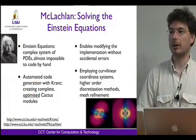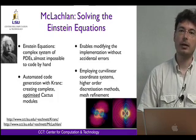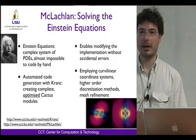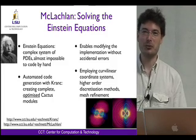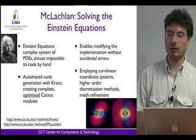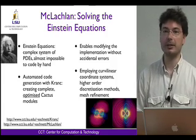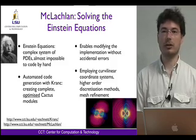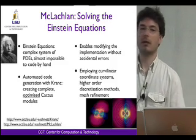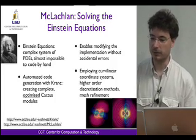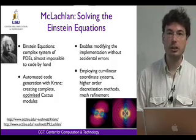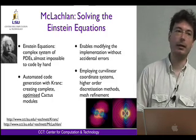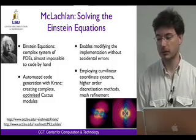To model the Einstein equations, we have created the McLachlan code. The Einstein equations are an incredibly complex system of partial differential equations, and it is virtually impossible to code them by hand correctly. We therefore use automated code generation that takes the Einstein equations and creates complete Cactus modules optimized for a particular architecture. Automated code generation allows us to modify the implementation without modifying the equations themselves, without introducing accidental errors, and also enables higher-order discretization methods, machine-dependent optimizations, support for new hardware, and curvilinear coordinate systems to increase accuracy.